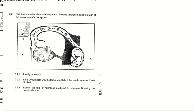Welcome to Irrigate. Today we're going to be doing practice number five on the human reproduction topic. We're going to look at the events that take place in the female reproductive system. Question 3.2 states that the diagram below shows the sequence of events that takes place in a part of the female reproductive system.